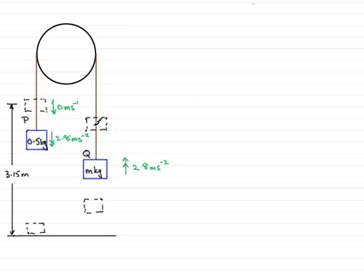And then, as soon as it gets here, the string becomes slack, and Q carries on into the air, and then comes back down again like that, and then the string becomes taut. We've got to find out the time that it takes for Q to go from here, up here, and back down again.